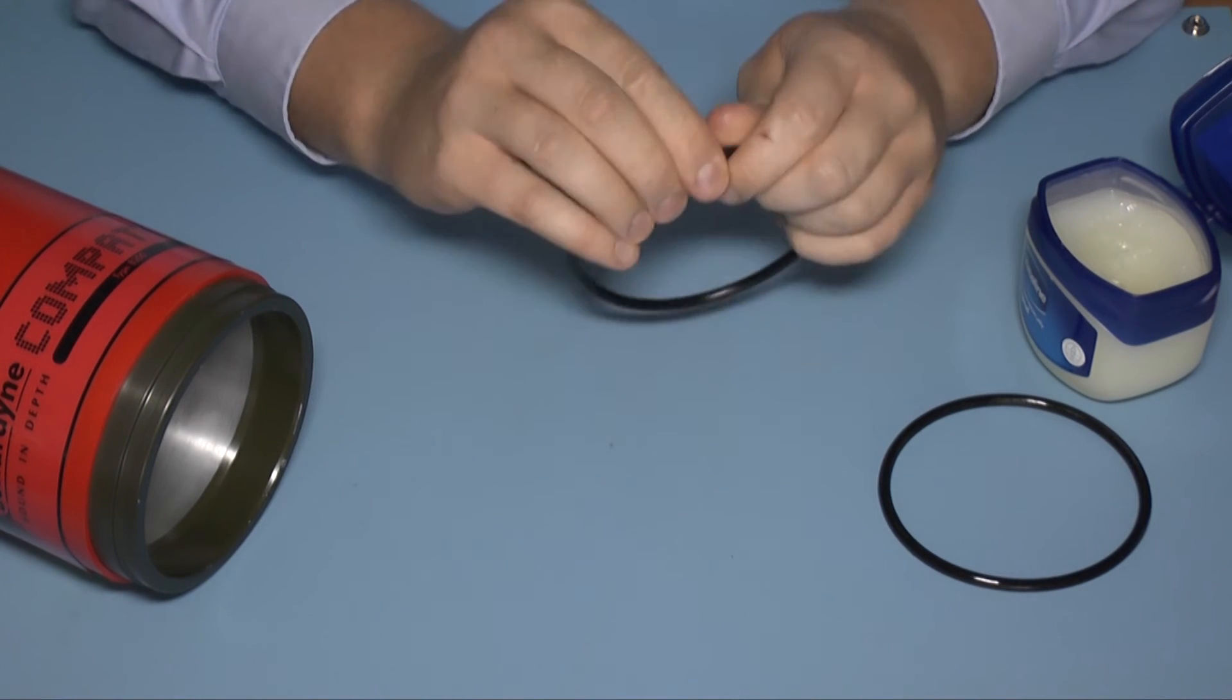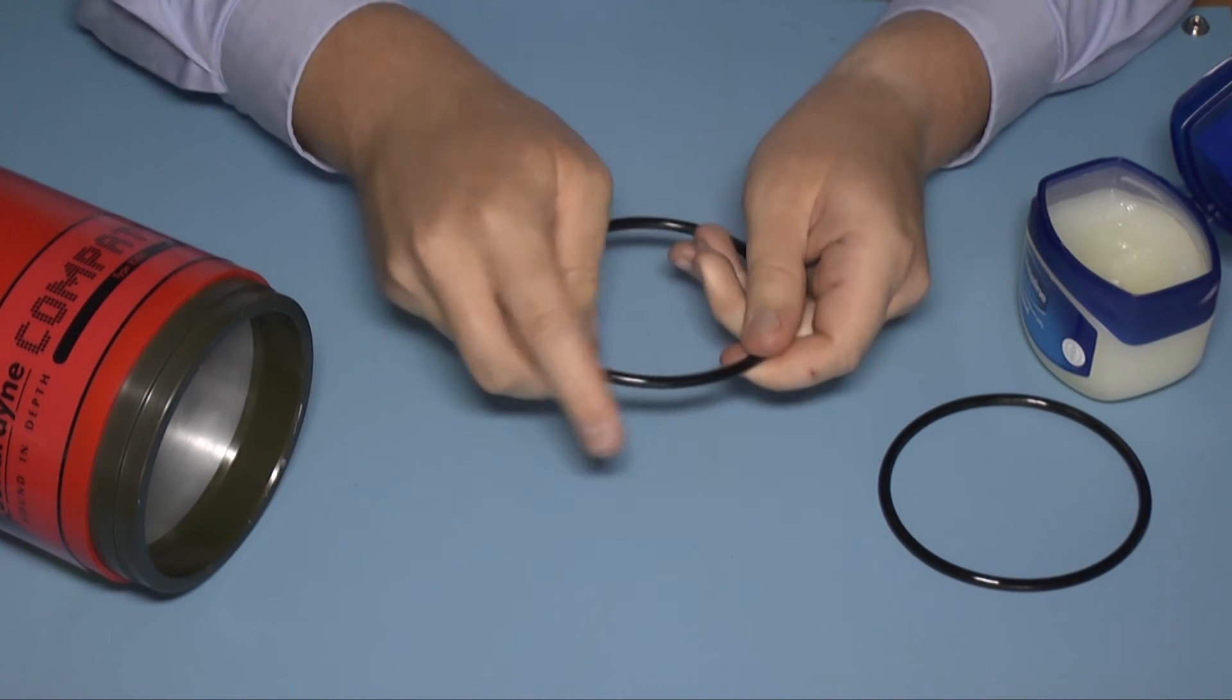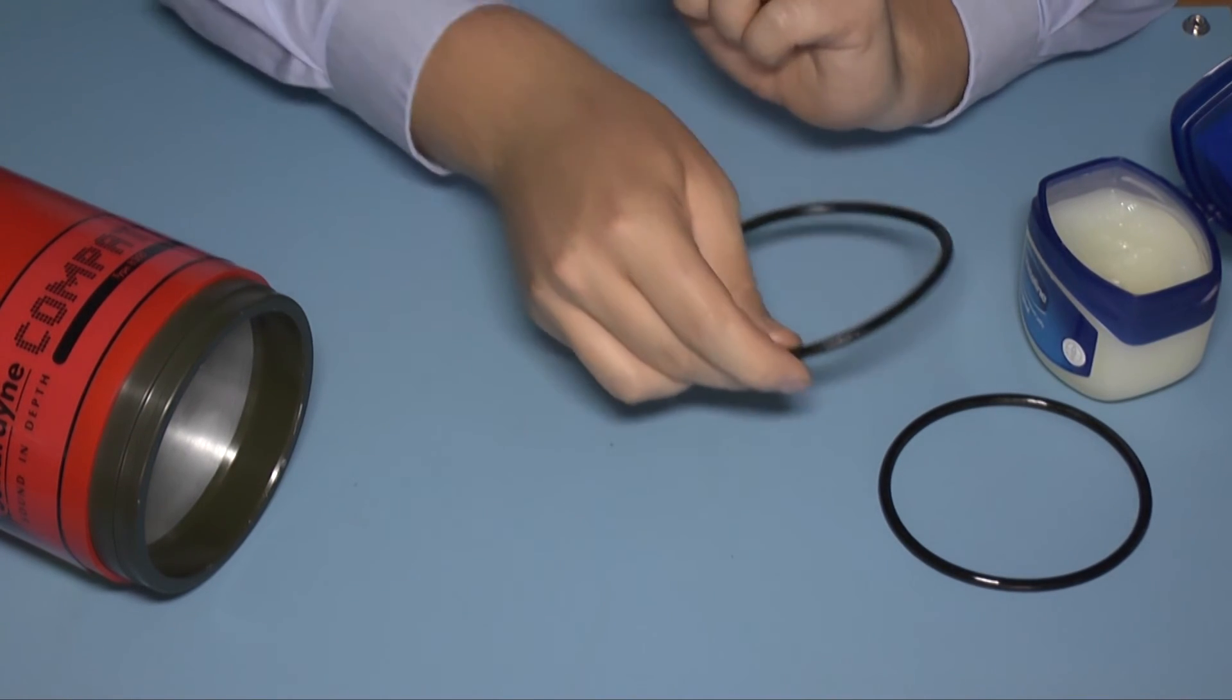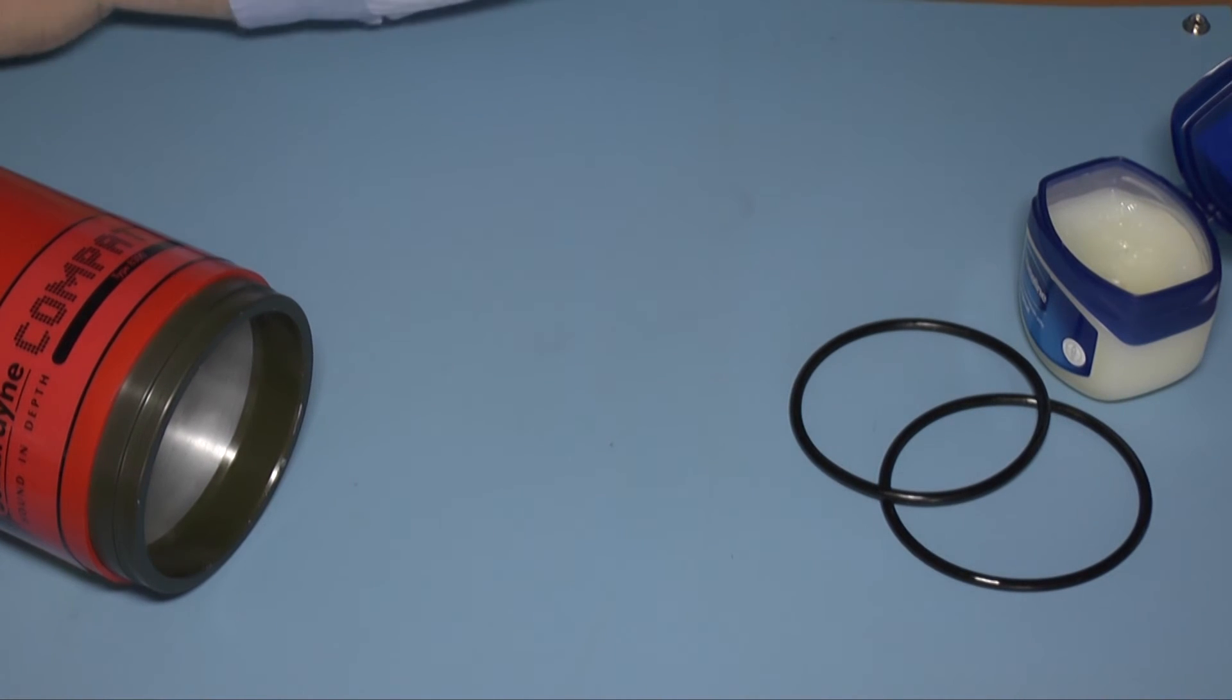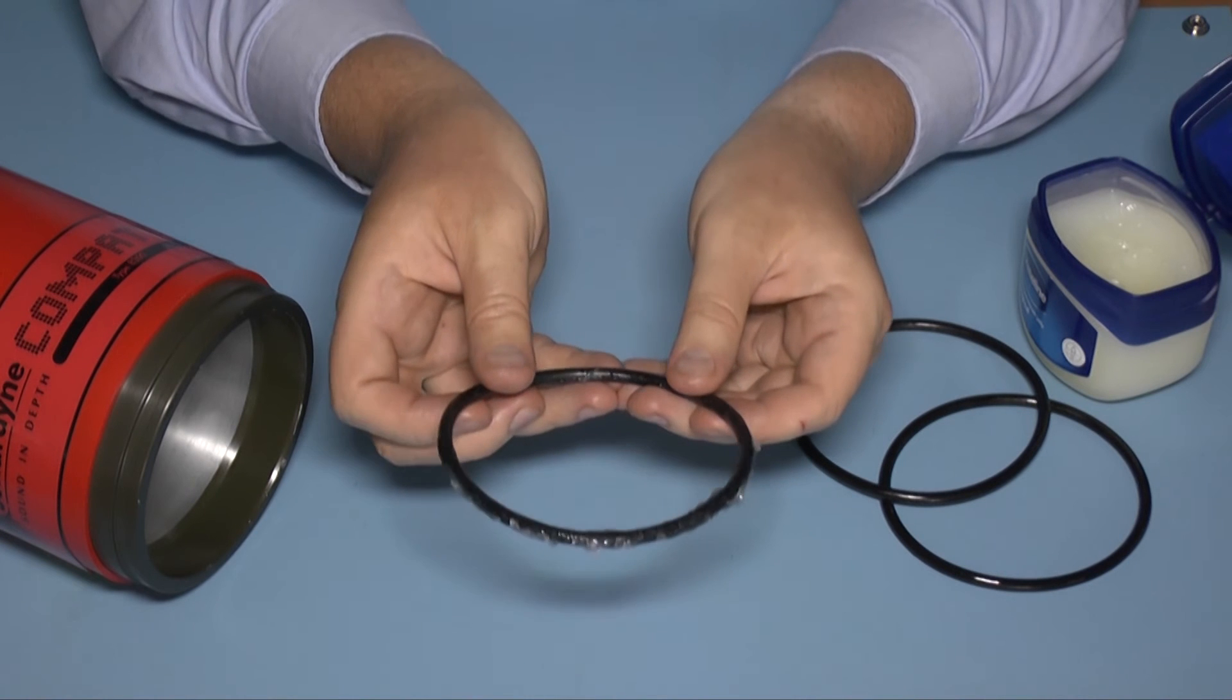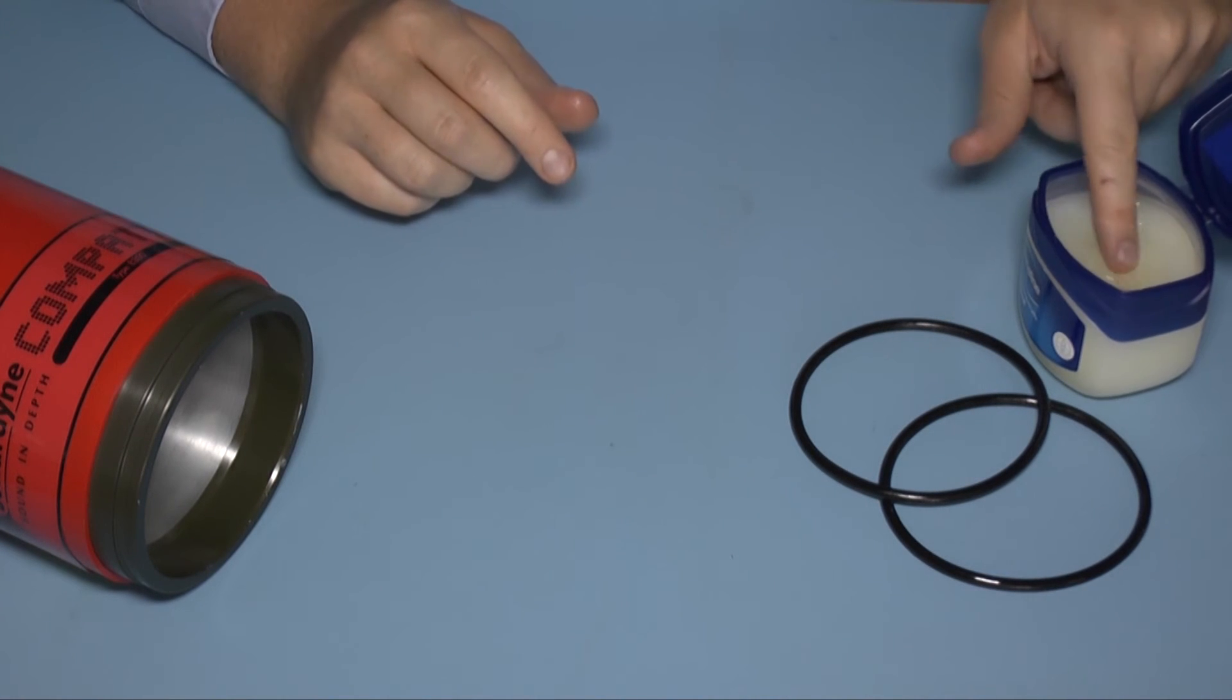Work the o-ring through your fingers, taking care not to apply too much Vaseline, as this can cause clumps like this example here. Now lubricate the inner bore of the housing.